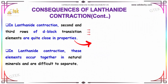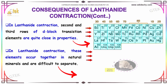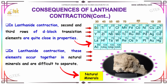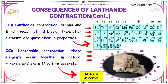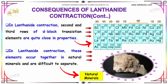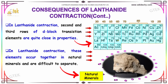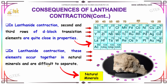Another consequence of lanthanide contraction is that the second and third rows of d-block transition elements are quite close in properties. Due to lanthanide contraction, these elements occur together in natural minerals and are really difficult to separate.